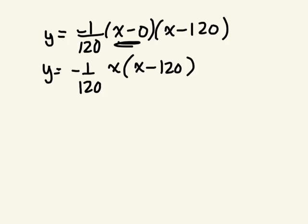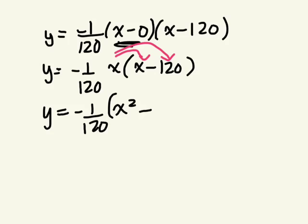Which part of this do we expand first? This and this, right? So Y equals negative 1 over 120. What's X times X? X squared. Negative 120X. Now we distribute our A value.